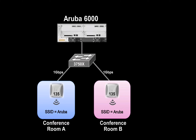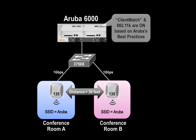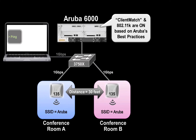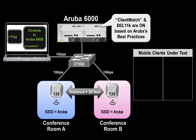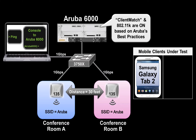Before we start the test, let's take a quick look at the setup. We have two Aruba AP-135s located in conference room A and conference room B, at a distance of 30 feet from each other. These access points are managed by Aruba's 6000 controller, configured with Client Match and 802.11k based on the recommended settings described in the best practices guide. We also have a wired client that will generate ping traffic to our wireless clients and provide access to the console port of the controller. Since we are focusing on two separate test objectives, we will use a Samsung Galaxy Tab 2 for the first test and an iPad for the second test.